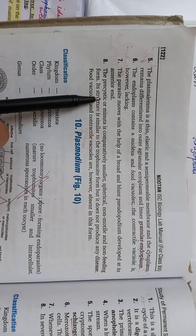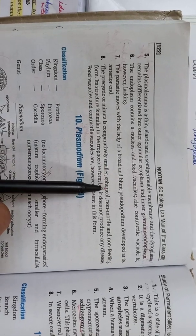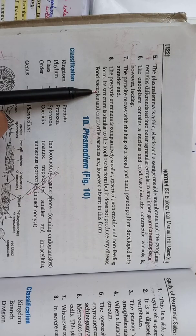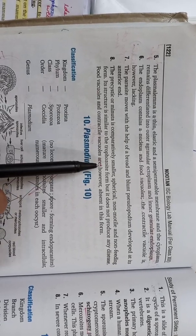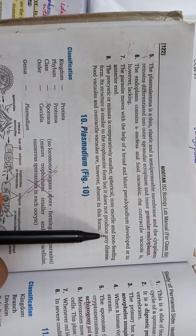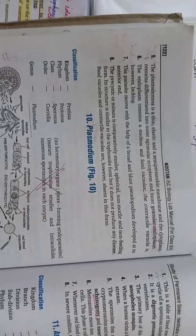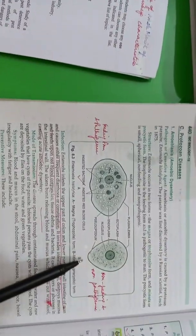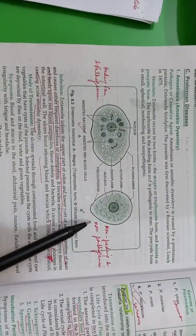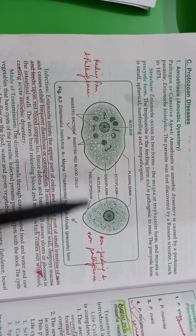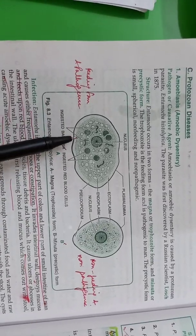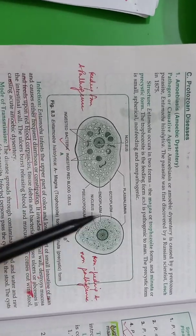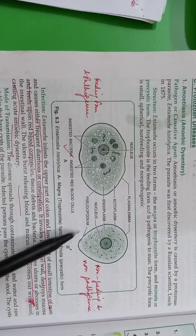Then finally, the pre-cystic or minuta is comparatively smaller, spherical, non-motile and non-feeding form. It is similar to trophozoid but does not produce any disease. Food vacuole and contractile vacuoles however are absent. So just now I explained you how the minuta is the non-feeding stage and the non-pathogenic stage. Though this is similar to trophozoid, this one, but this will not produce any disease. And this is your work for today children.